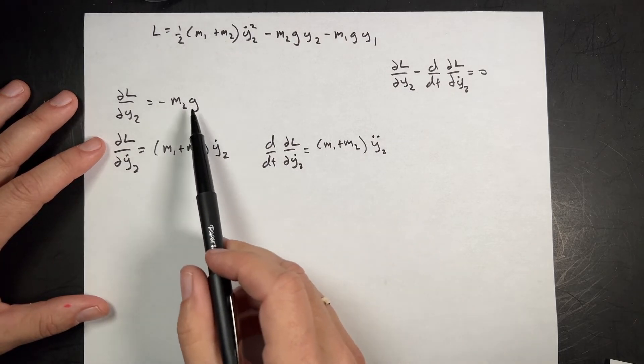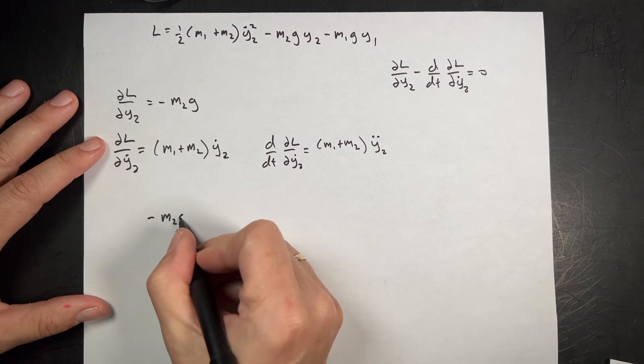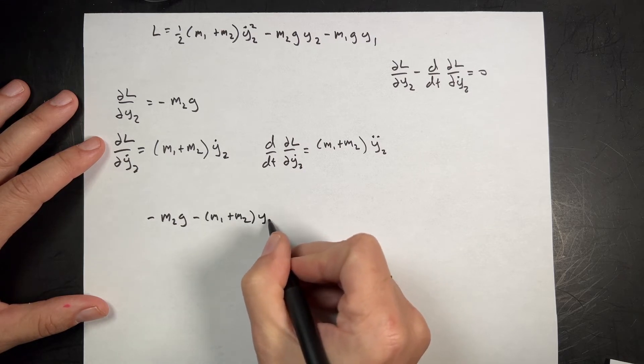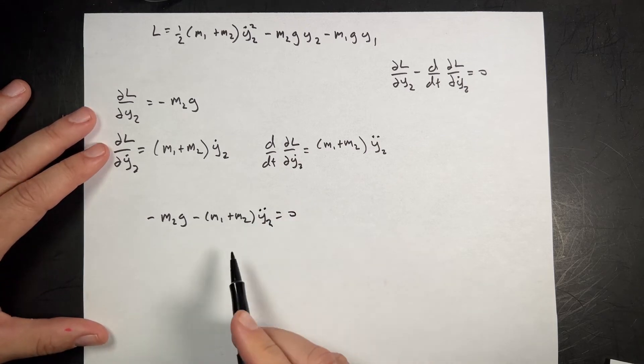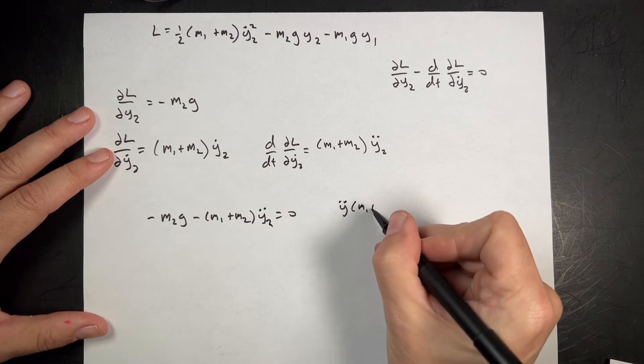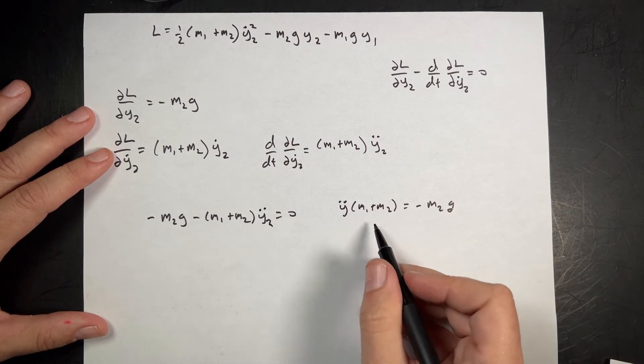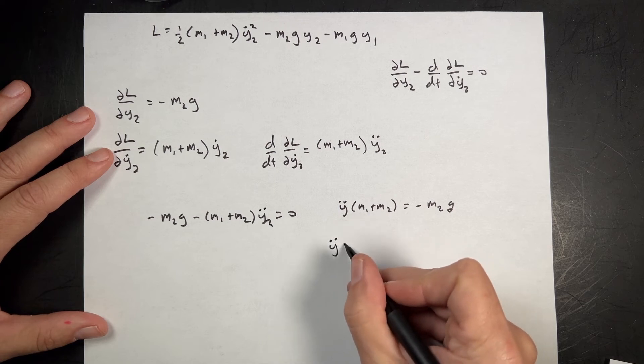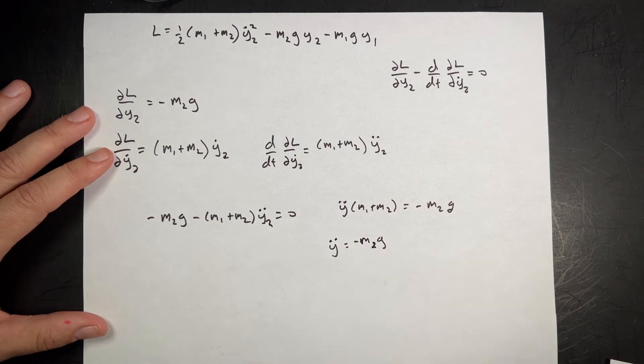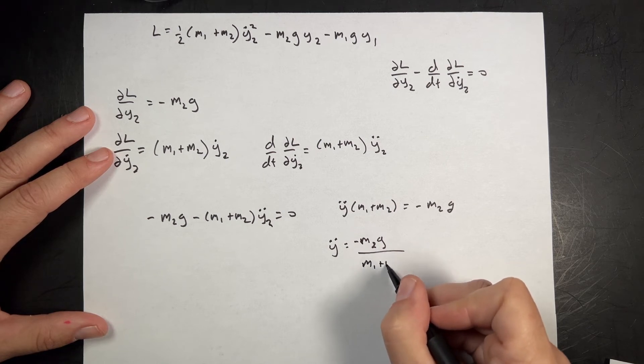So now this minus this is equal to zero according to this. I get negative m2 g minus (m1 plus m2) y2 double dot equals zero. I'm going to add this to both sides and get (m1 plus m2) y2 double dot equals negative m2 g. If I divide both sides by m1 plus m2, y2 double dot equals negative m2 g divided by (m1 plus m2).